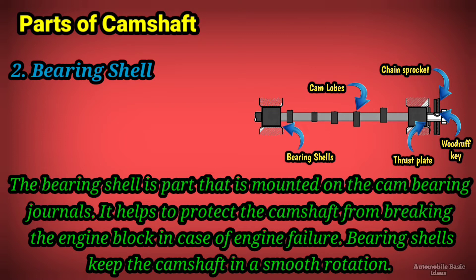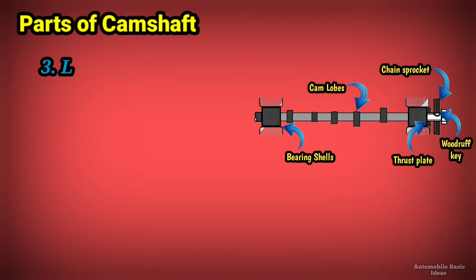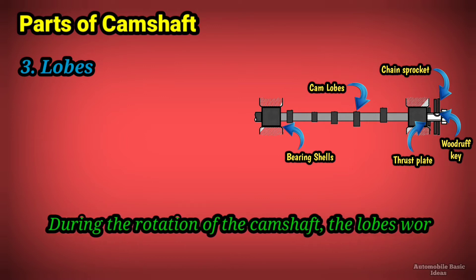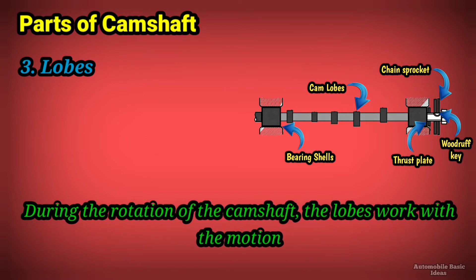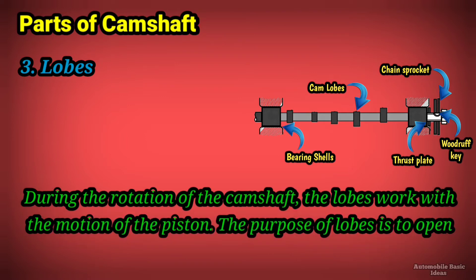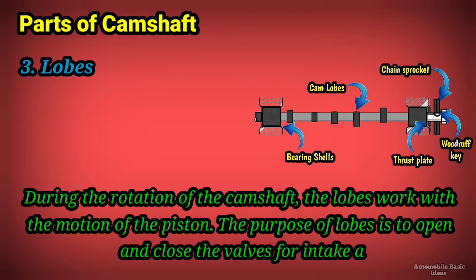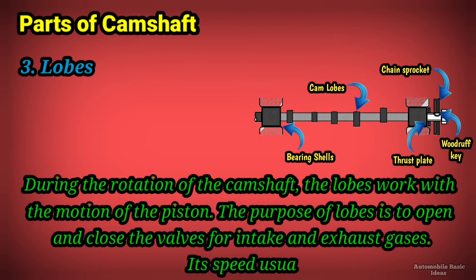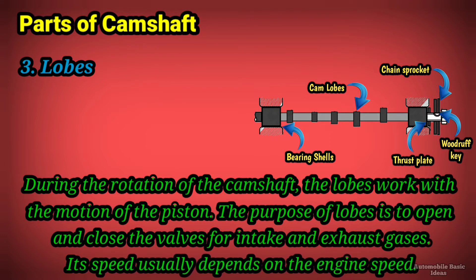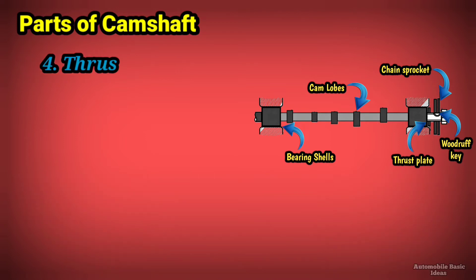Three, lobes — during the rotation of the camshaft, the lobes work with the motion of the piston. The purpose of lobes is to open and close the valves for intake and exhaust gases. Their speed usually depends on the engine speed. Four, thrust plate.